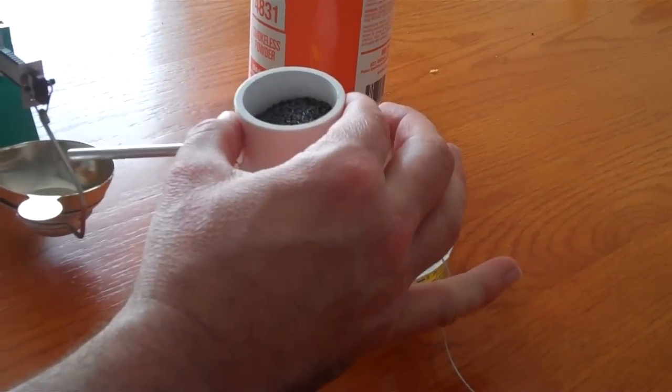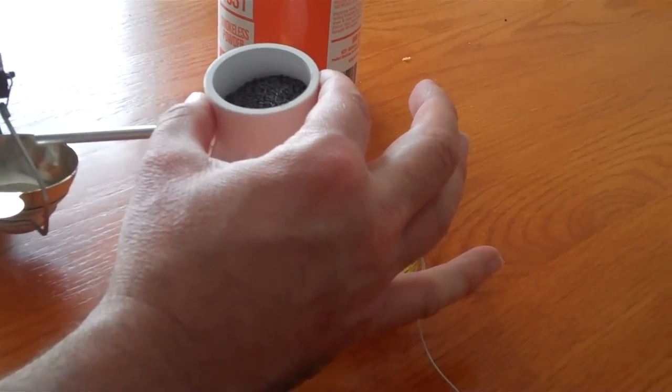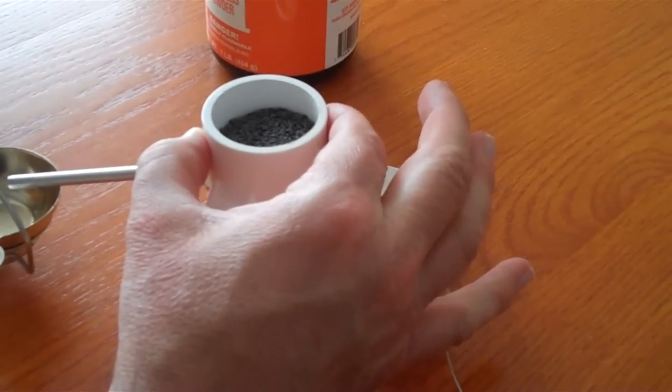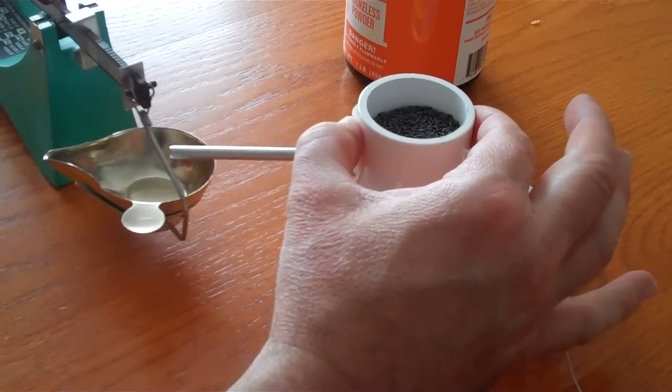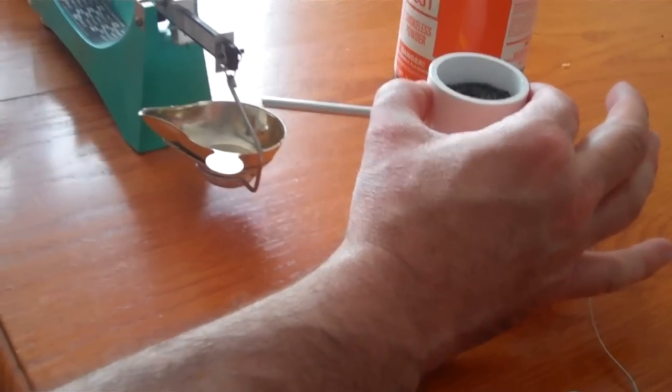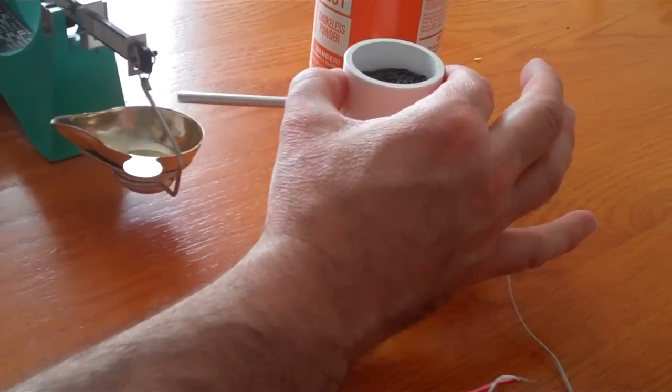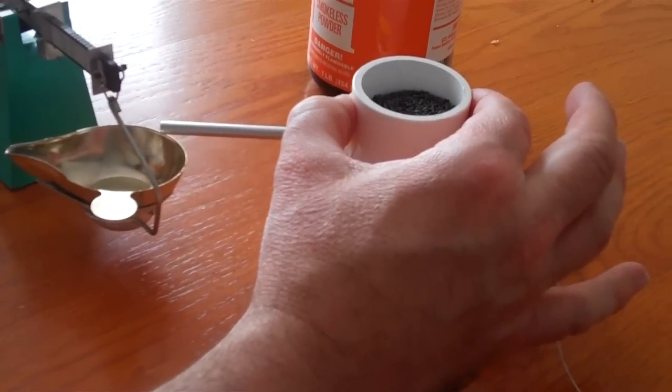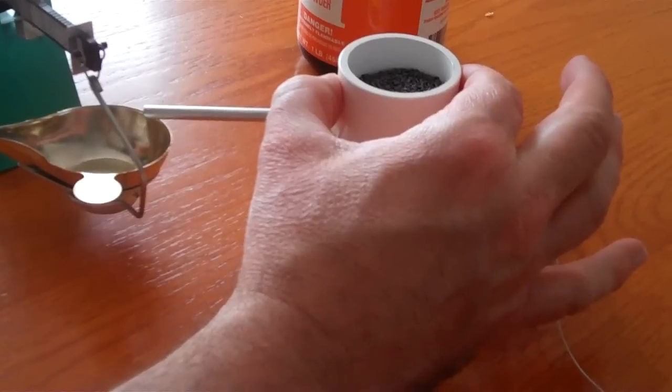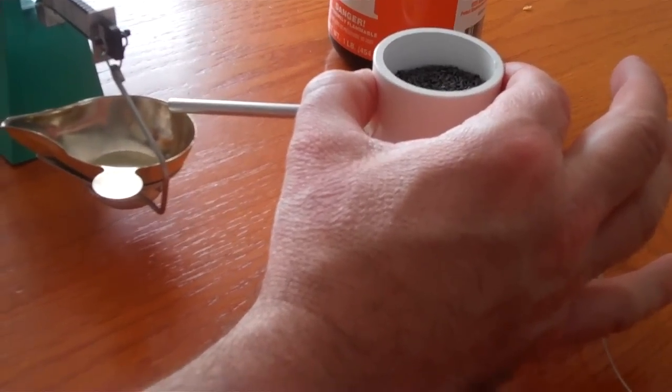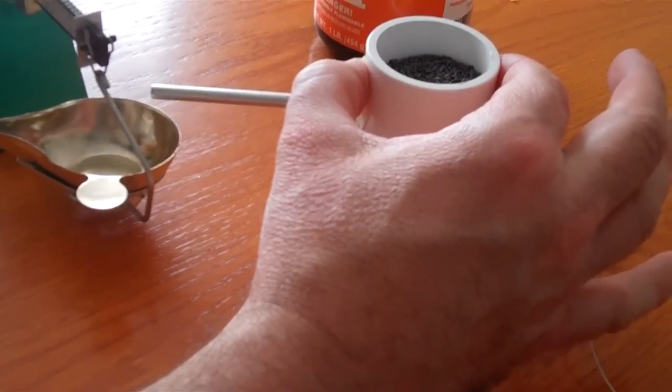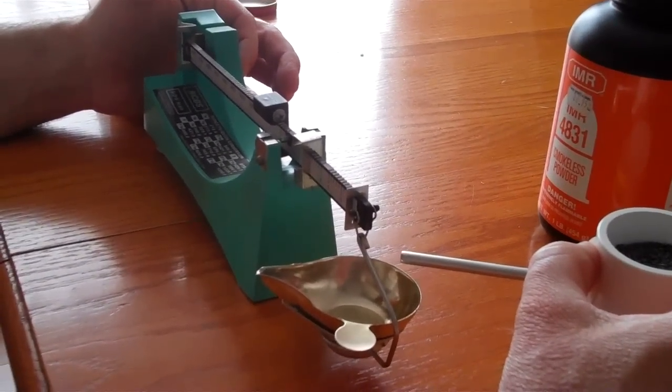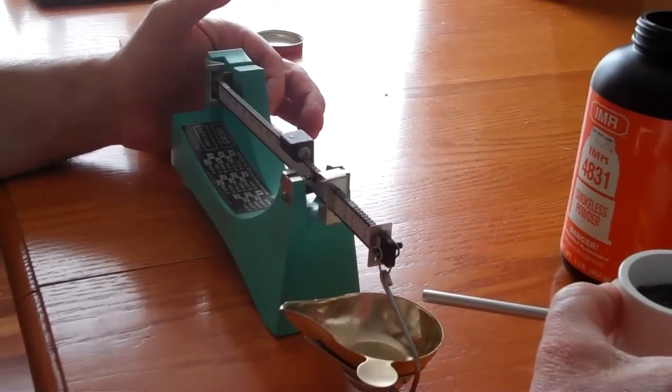Okay so here's the powder trickler and it's filled with IMR 4831 and the goal is that the powder will flow from here into the RCBS manual scale. The reason I'm using the manual scale is I have a light sensor that I want to attach to the scale, and on the back here you can see there's this little piece of copper. The goal is for once the light sensor gets disrupted, that it'll shut off the powder trickler.